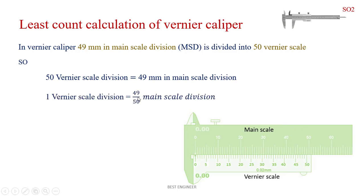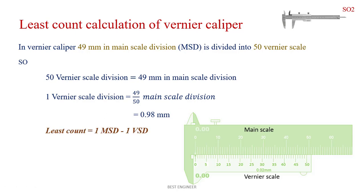So, 1 vernier scale division is equal to 49 divided by 50 main scale divisions, which is equal to 0.98 mm. Least count is equal to 1 main scale division minus 1 vernier scale division — that is 1 mm minus 0.98 mm — so the least count is 0.02 mm.